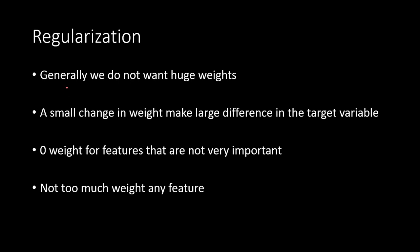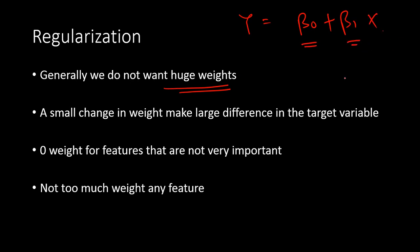What is regularization all about? Generally, we do not want huge weights in our model. If a model has parameters beta naught, beta 1, or beta 2, we do not want these to be huge numbers. The weights should not be very high — that's not expected in a model.